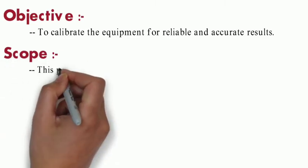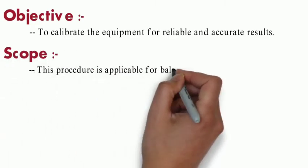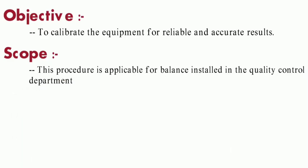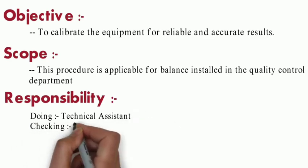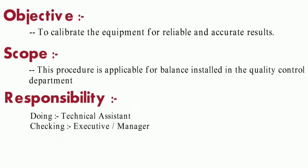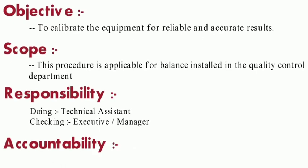Scope is this procedure is applicable for a balance installed in quality control department. Responsibility: doing is for technical assistance, and checking is for executive and manager. Suppose we are executive, so we have to check it and technical assistance will perform this SOP. Accountability is the responsibility of the head of the department.